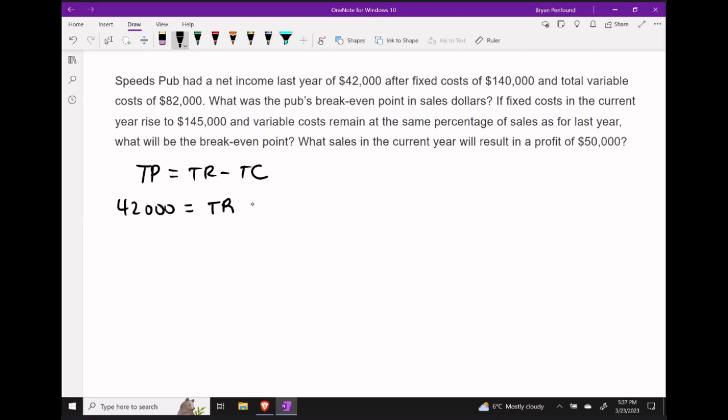So usually we take our total revenue, we'll subtract off our variable costs of $82,000, and I'll subtract off our fixed costs of $140,000.